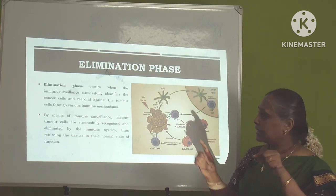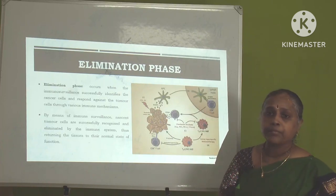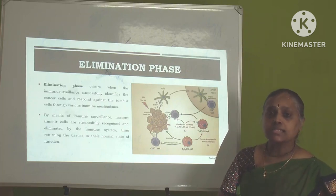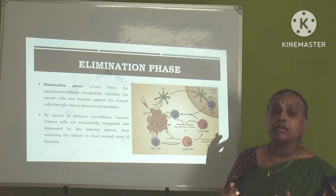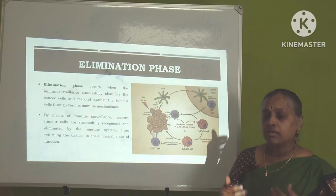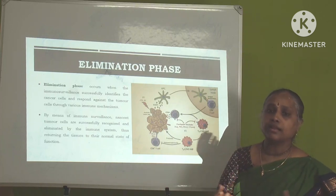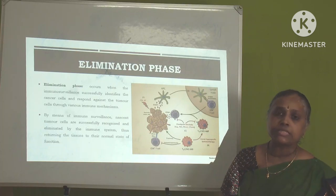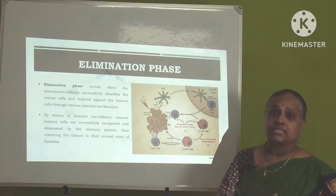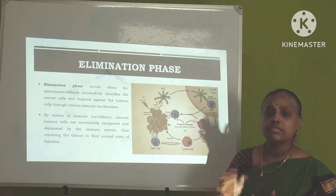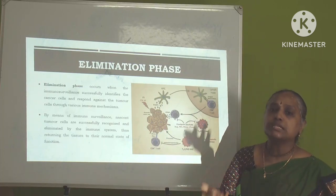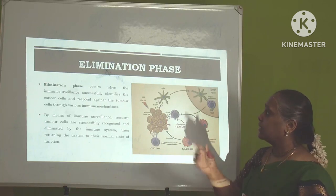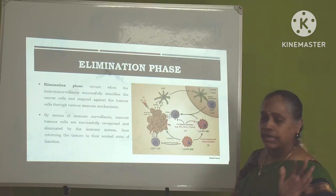If the response ends in this elimination phase, we may not even know that we developed a tumor cell. Scientists say that every day we are developing thousands of cancer cells because we are breathing polluted air, consuming polluted water, and taking many chemicals as food preservatives and pesticides. By all means, we are exposed to various carcinogens, and thousands of normal cells are transformed into cancer cells daily, but due to our immune response, they are eliminated from our body.